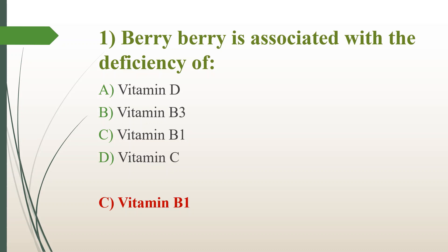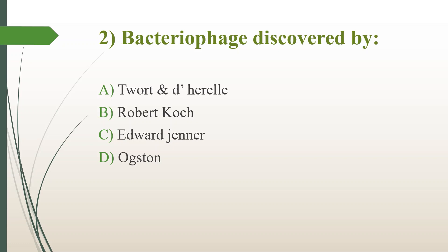Second question: Bacteriophage was discovered by — option A, Twort and D'Herelle; option B, Robert Koch; option C, Edward Jenner; option D, Alexander Fleming. The answer is option A, Twort and D'Herelle. Bacteriophages are viruses that infect and replicate only in bacterial cells. Robert Koch is the father of bacteriology. Edward Jenner is the father of vaccination and invented the smallpox vaccine. Sir Alexander Fleming discovered Staphylococcus.